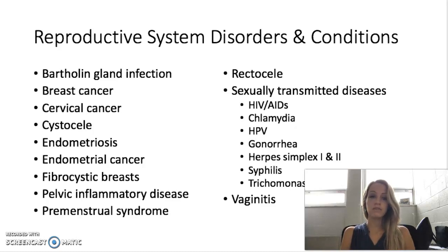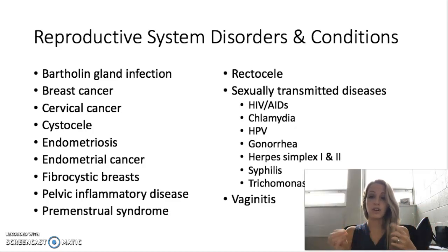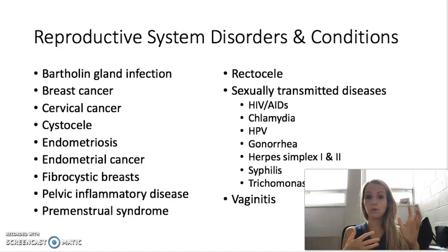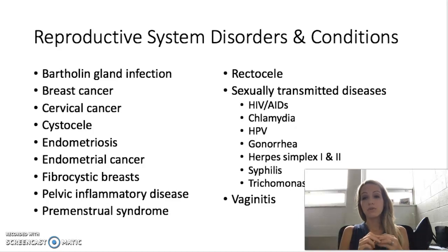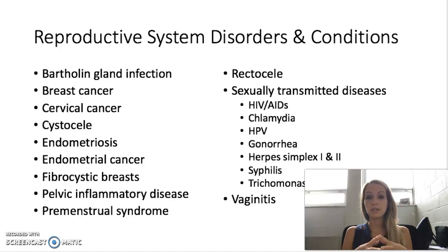Endometriosis. This is when there's presence of the endometrium at other sites other than the uterus. Sometimes this endometrium can start growing on the ovaries and the fallopian tubes, even into the bowels, and it's been seen as far up as the lungs. It's growth of this endometrium in places that it shouldn't be. This can cause pelvic pain, abnormal bleeding, and even infertility issues. It is more common now — you'll hear more patients saying that they have endometriosis.